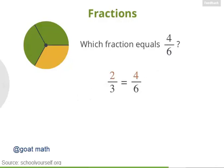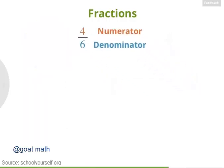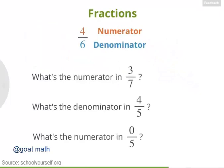The number above the division line in a fraction is called the numerator. So for these fractions, 2 and 4 are the numerators. The number below the division line is called the denominator. Try identifying the numerator and denominator for a few more fractions.